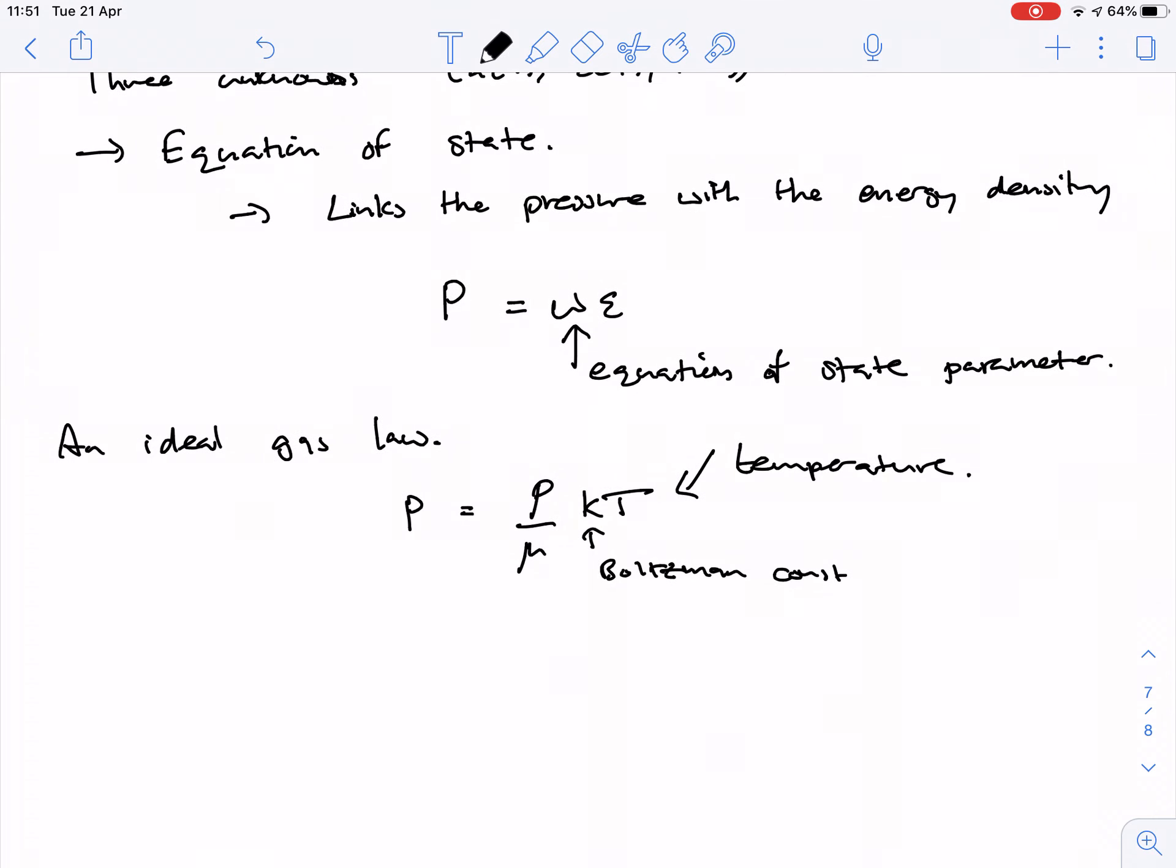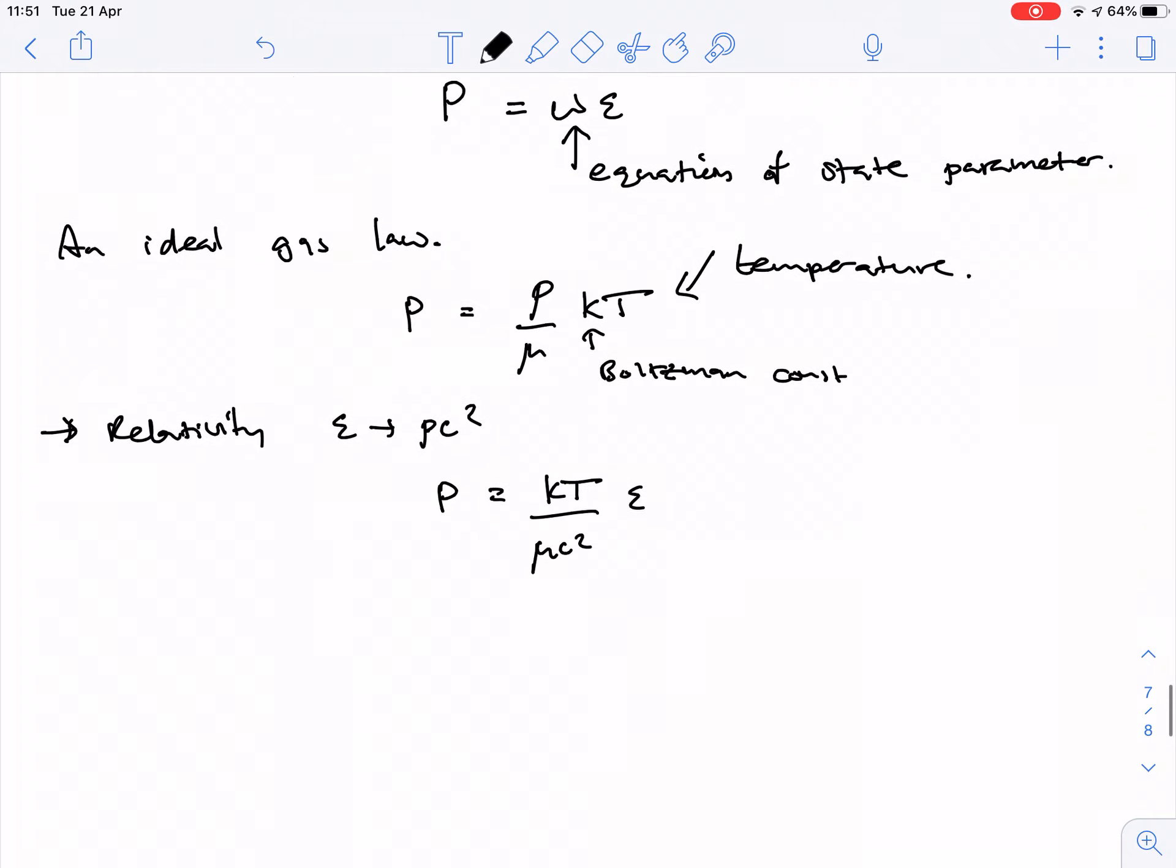And then for a relativistic scenario, so your energy density is rho c squared, then that just becomes p equals kt over mu c squared e. And another relation you probably don't know off the top of your head, but it exists for an ideal gas is that you can link the temperature with the velocity, the root mean velocity, if you like, of the material.